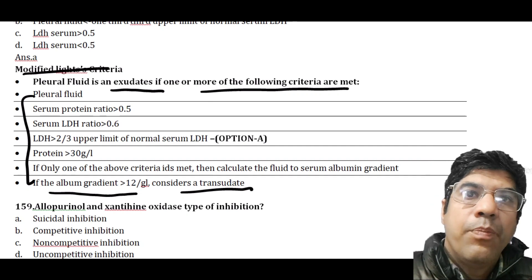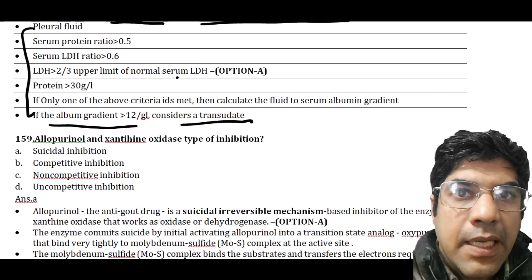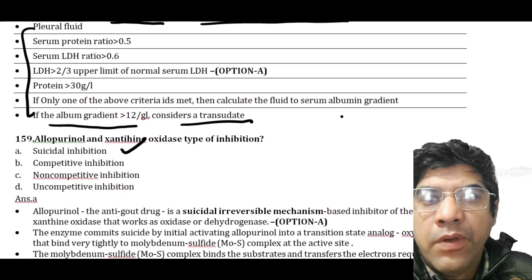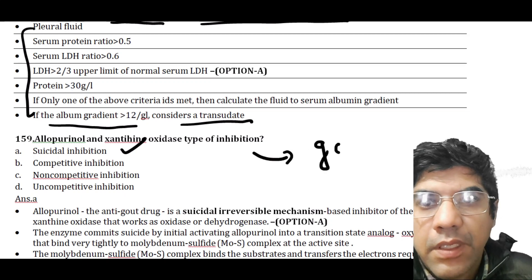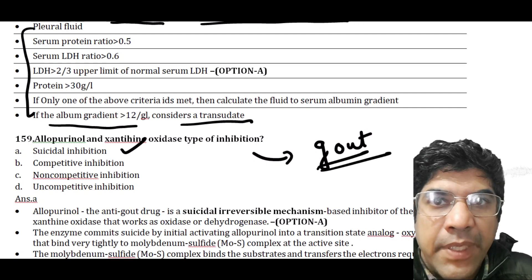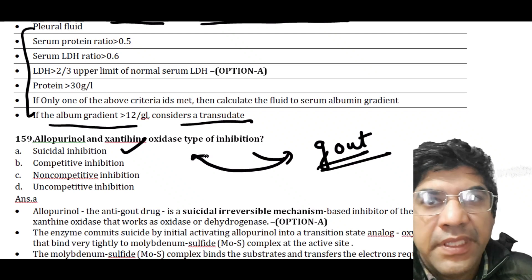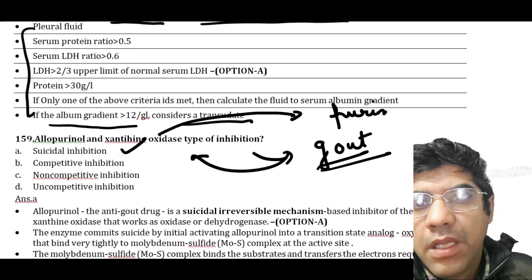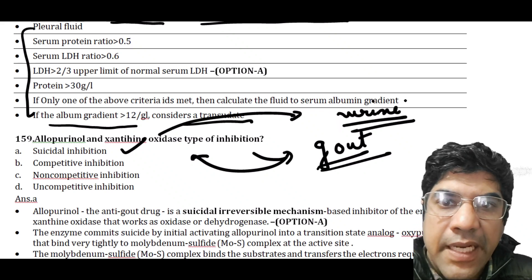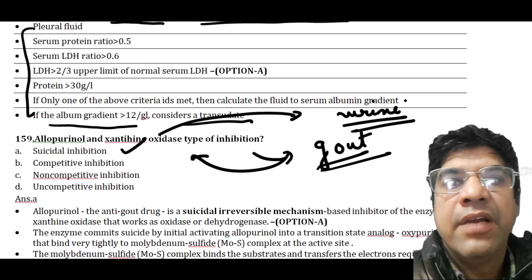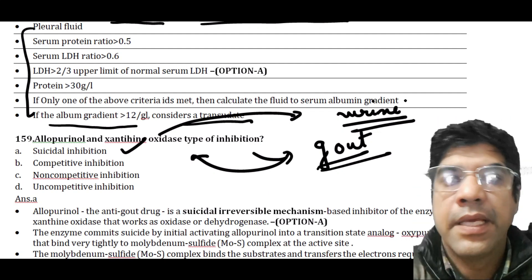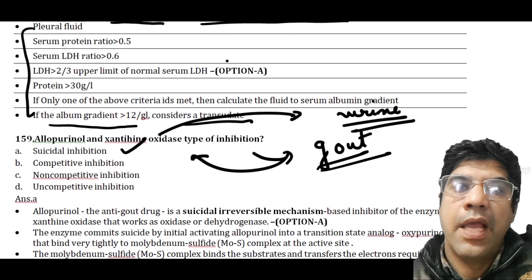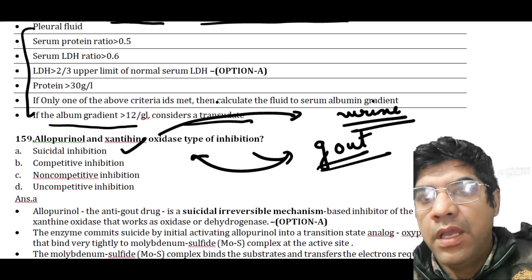Allopurinol and xanthine oxidase typically show suicide inhibition. Allopurinol is used in the treatment of gout and acts as an inhibitor of xanthine oxidase — an enzyme involved in purine metabolism, converting hypoxanthine to xanthine and xanthine to uric acid. Elevated uric acid can lead to gout with excessive deposition of urate crystals in the joints. Allopurinol is classified as a suicidal or mechanism-based inhibitor of xanthine oxidase.